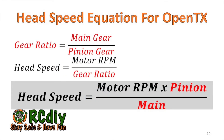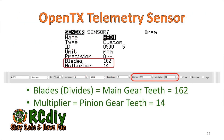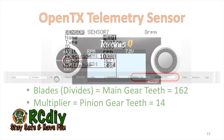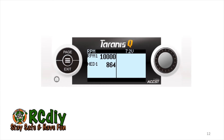The head speed and gear ratio equations can now be rearranged to have head speed equal to the motor RPM multiplied by the number of pinion gear teeth divided by the number of main gear teeth. In OpenTX, the number of main teeth is entered into the blade field and the number of pinion teeth is entered into the multiplier field. Now OpenTX will be able to display the head speed.